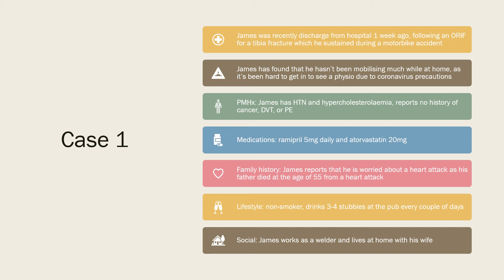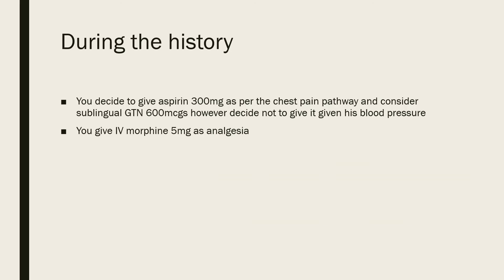Past medical history: hypertension and hypercholesterolaemia; no history of cancer, DVT, or previous PE. Medications: ramipril 5mg daily and atorvastatin 20mg. Family history: concerned about a heart attack as his father died at 55 from a heart attack. Lifestyle: non-smoker, drinks three to four stubbies every couple of days, works as a welder, lives at home with his wife.